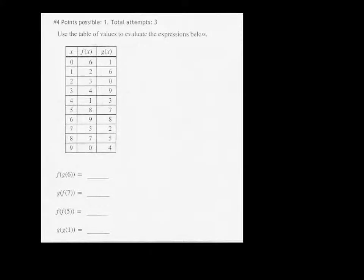Number 4 is this table of values, and we're using composition of functions. So for these you want to start in the inside, so we need to find g of 6 first. So we go down until we find 6, and g of 6 is 8. So then we need to plug 8 in for f of x, and it's 7. So the first one is 7. The next one we want f of 7, so go down to 7. f of 7 is 5, plug 5 in, g of 5 is 7.